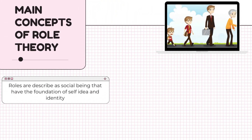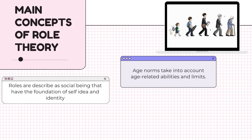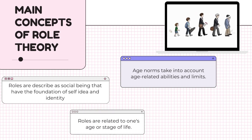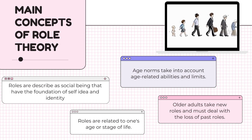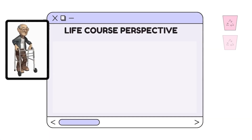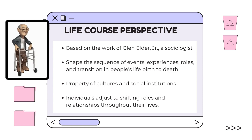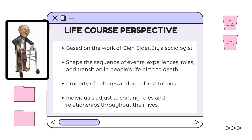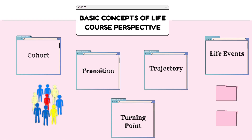The main concepts of role theory: roles are described as social beings that have the foundation of self-idea and identity. Age norms take into account age-related abilities and limitations that have been established. Roles are related to one's age or stage of life — older adults take on new roles and must deal with the loss of past roles. Life course perspective is based on the work of sociologists that concentrate on the social pathways that shape the sequence. It is also a property of cultures and social institutions, and individuals adjust to shape roles and relationships throughout their life. There are five basic concepts of life course perspective: cohorts, transition, trajectory, life events, and turning point.